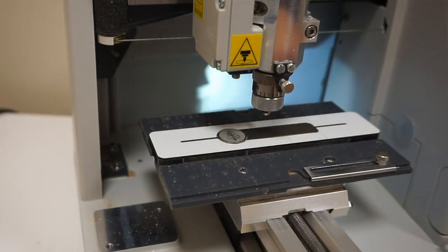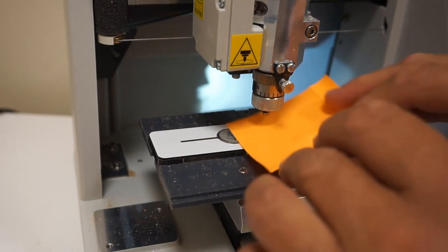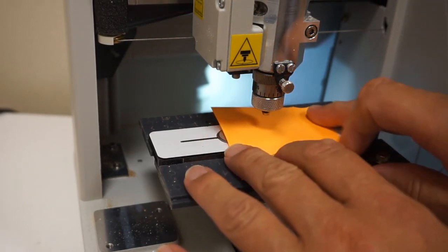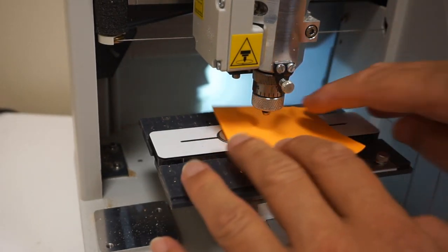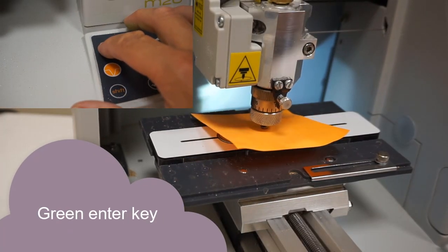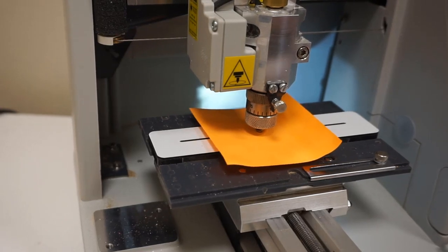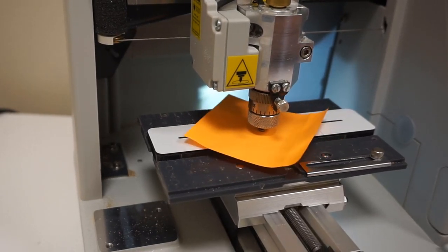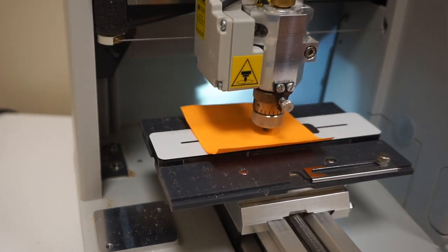Now before you hit the green button to start the vendor recommends you put a post-it note on top. This is a good idea as it stops the head or any swarf scratching the surface of the badge. Now press the green enter key. The machine will start to engrave the name. You should hear the cutting tool is spinning as well so the process is quite noisy.